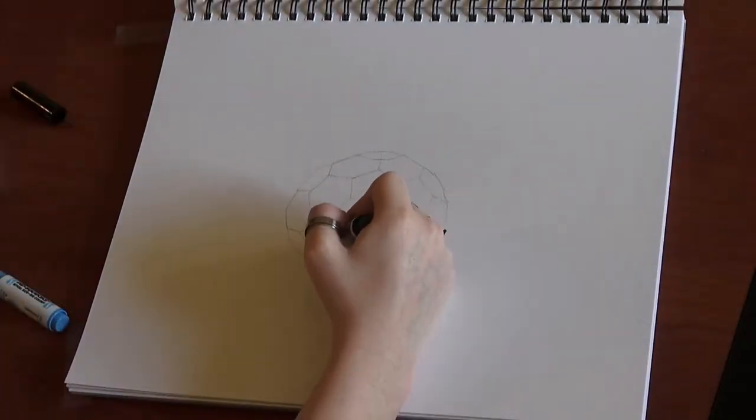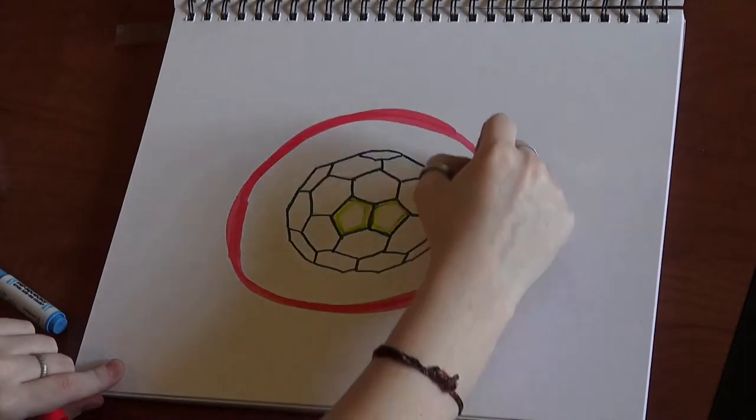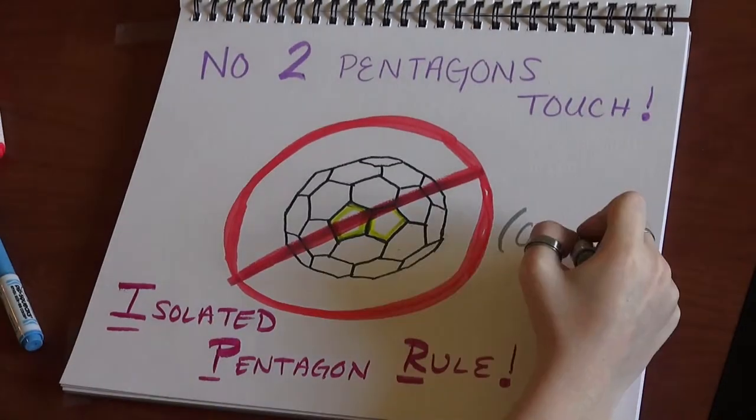These isomers follow a rule that says no two pentagons can touch each other. This rule is called IPR, and stands for Isolated Pentagon Rule.